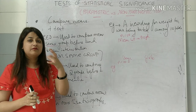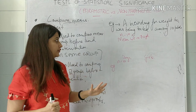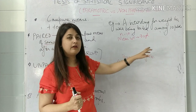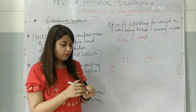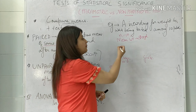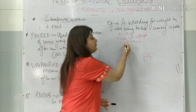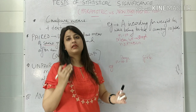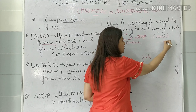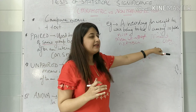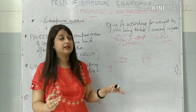Let us understand with examples. For a paired T-test: suppose a new drug for weight loss is being tested among 10 patients, N=10. The mean weight of that group is say 100 kg. I give the drug for 3 months, then I take their weight again. So I am recording the mean weight before and after giving this drug — and I am doing it on the same 10 people. So this becomes a paired T-test.